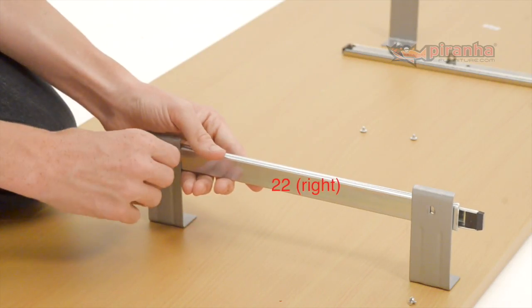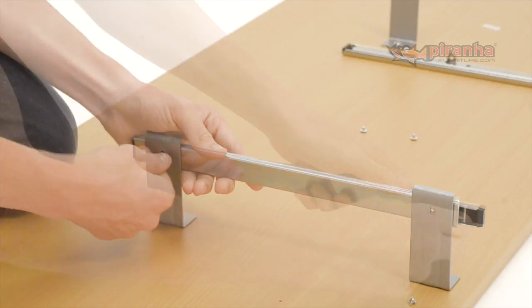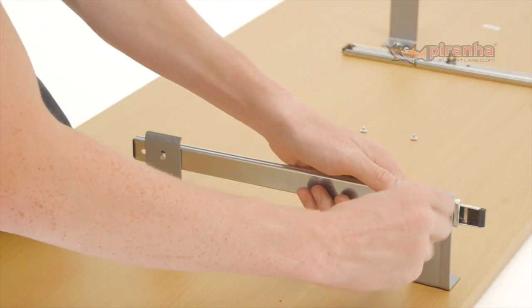Step 19. Attach the keyboard shelf runners to the brackets. Remember, these are parts 22, not parts 4.